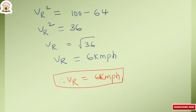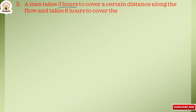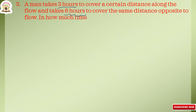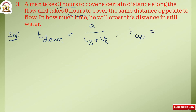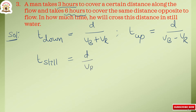Next, we go to the third question. A man takes 3 hours to cover a certain distance along the flow and takes 6 hours to cover the same distance opposite to flow. In how much time will he cross this distance in still water? Let us go to the solution. T down equals D by Vb plus Vr, and T up equals D by Vb minus Vr.